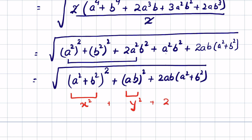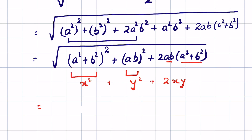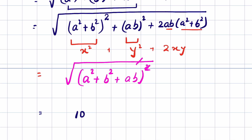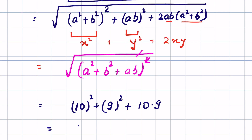This matches the form x squared plus y squared plus 2xy, so we can write it as (a squared plus b squared plus ab) whole squared under the square root. Removing the square root with the square, and substituting a equals 10 and b equals 9: a squared is 100, b squared is 81, and ab is 90. So the answer is 100 plus 81 plus 90 equals 271. Like and subscribe, thanks for watching.